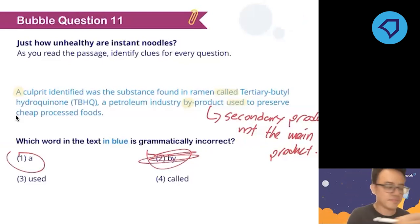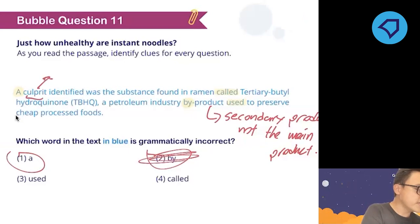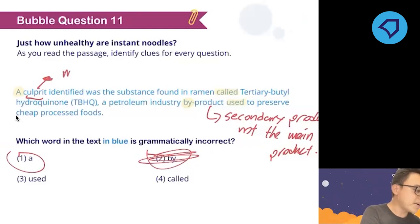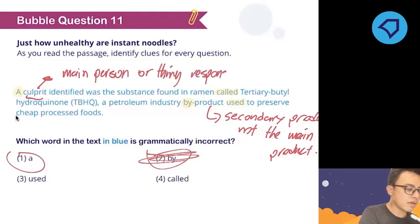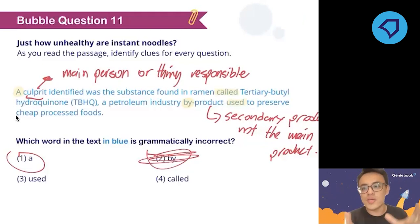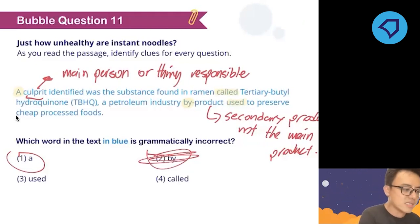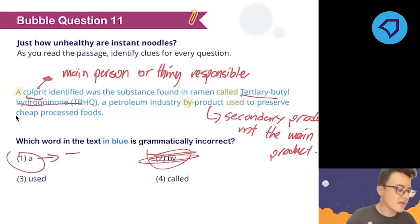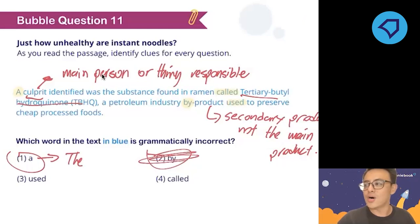The correct answer is number one: 'a culprit' is wrong. 'Culprit' means the main person or thing responsible. If it is the main thing and we've mentioned it specifically by name — tertiary butyl hydroquinone — we cannot use the indefinite article 'a.' When something is specific and important, we use 'the.' So the answer should be 'the culprit,' not 'a culprit.'